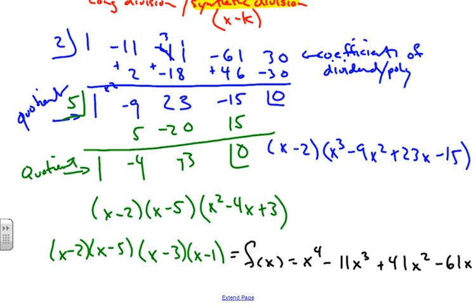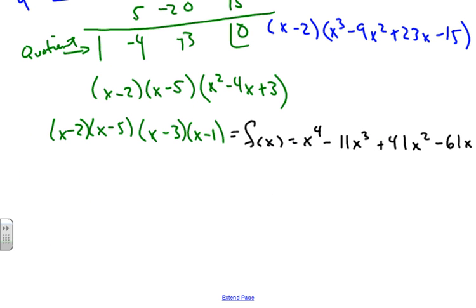Okay, now we want to find our zeros and sketch this graph. Given the factored form of this, finding the zeros is very simple. We can set this equal to zero and we find our zeros to be x = 2, x = 5, x = 3, and x = 1.